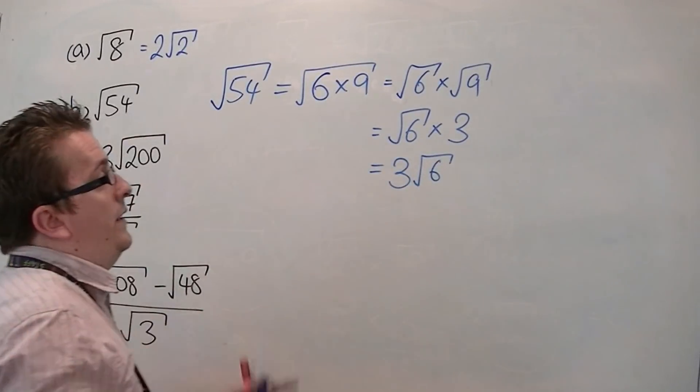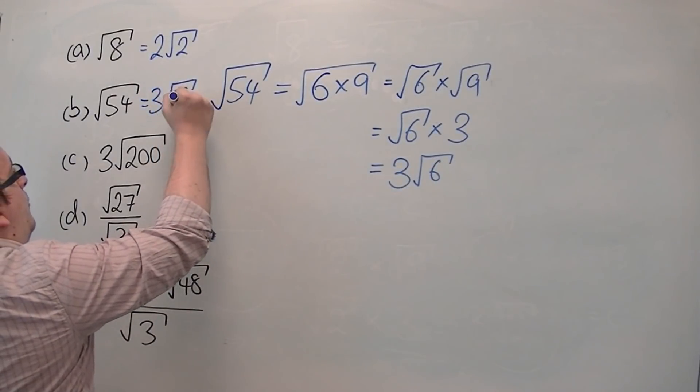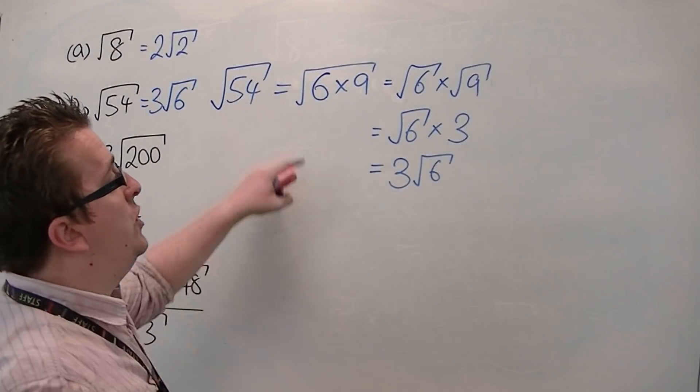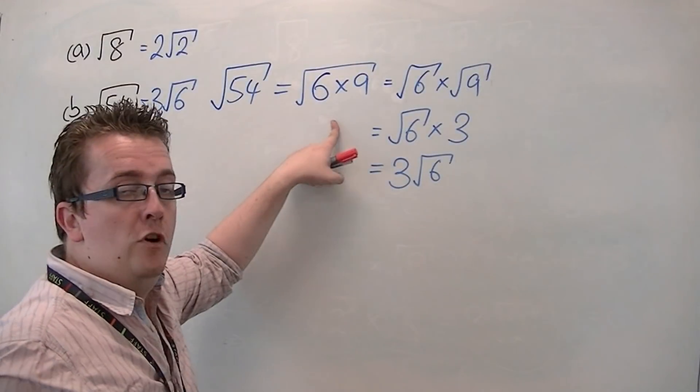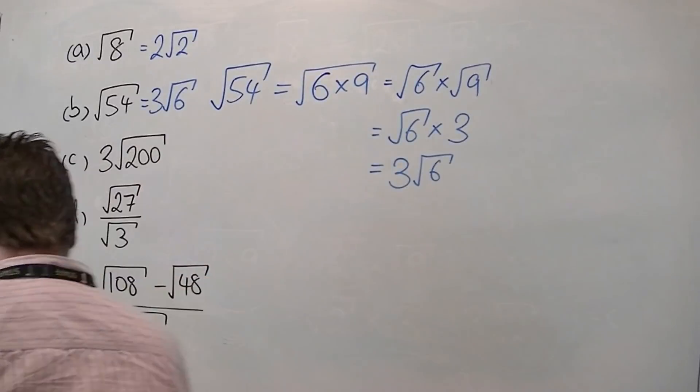So we can just write that as 3 root 6. And that's really all there is to it here. And once again, you may have been able to jump straight to 3 root 6 from the square root 6 times 9. So that's that one.